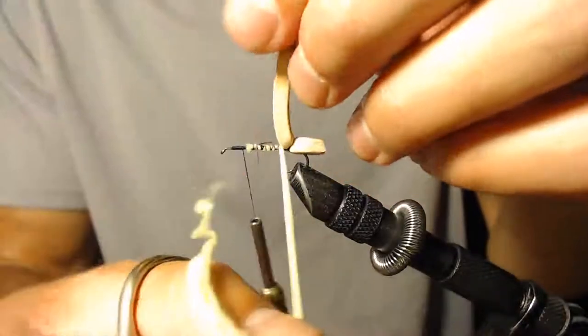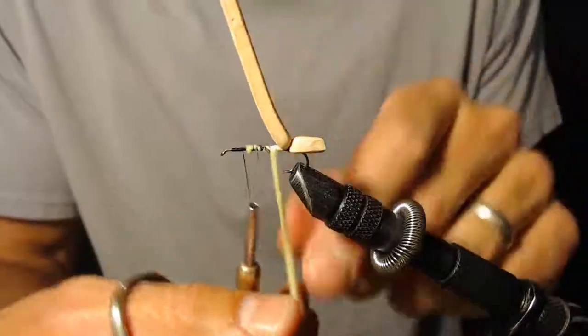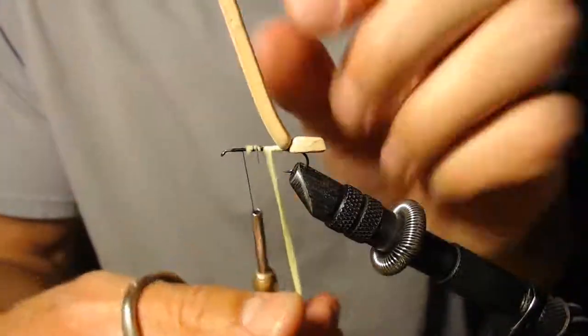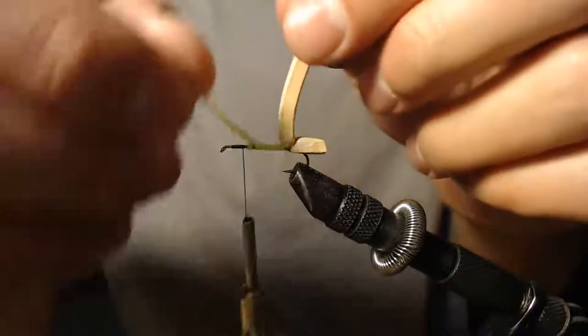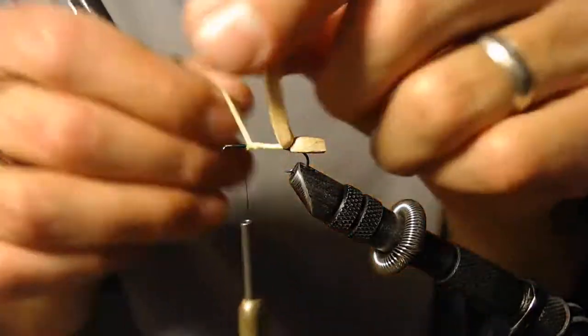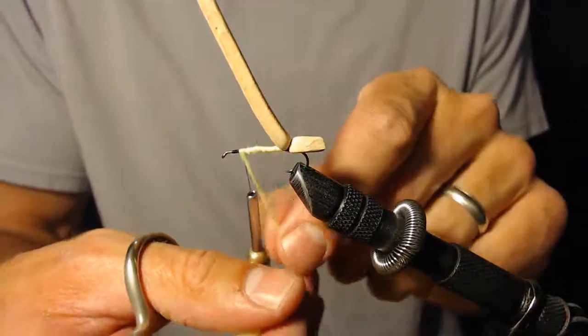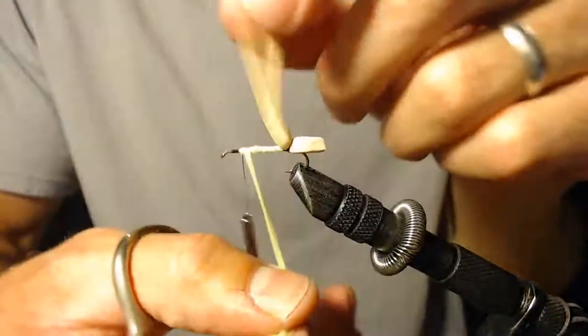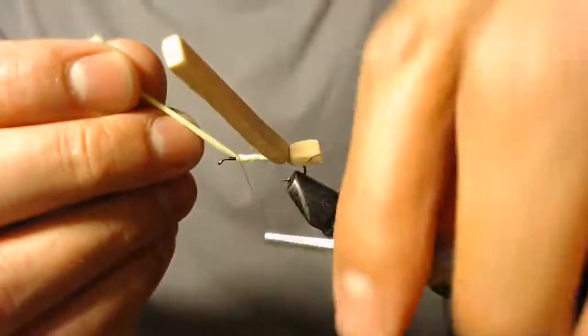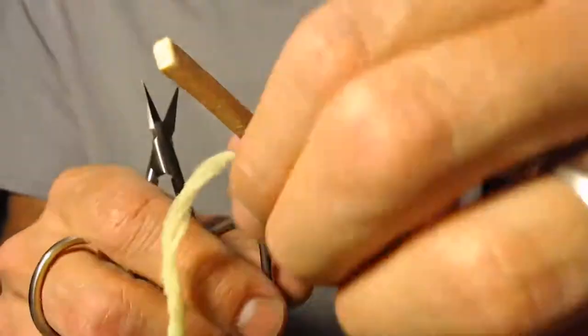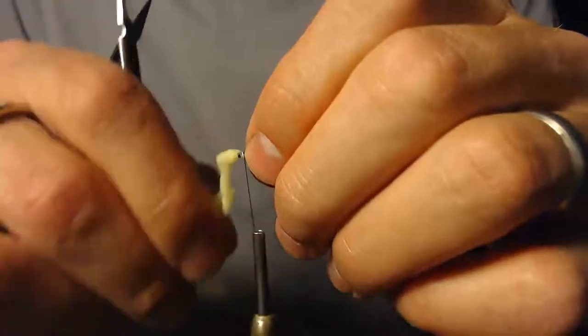Then we're going to wrap this yarn right up the shank of the hook. This gives the underbody of this fly a little contrast in color. You can use any color you want, I prefer lighter colors when I'm doing hopper patterns. It just depends on what the fish prefer in the waters that you like to fish. Okay, once I get that yarn tied off.